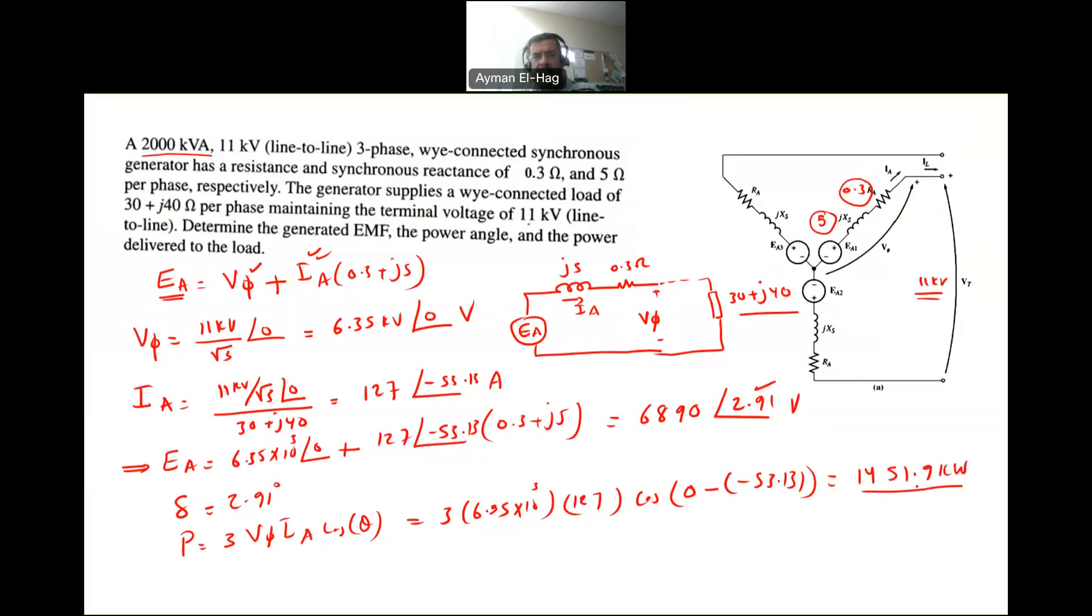So this is how much power I can get from my generator, 1451. Now, the power factor of this, that's not required in the question, is equal to cosine 0 minus minus 53.13, which is equal to 0.6. This is the power factor. So at this power factor, the P rated of the generator is equal to the 2,000 kVA times the 0.6, which is equal to 1,200 kilowatt.